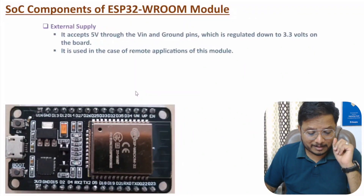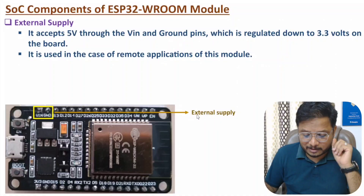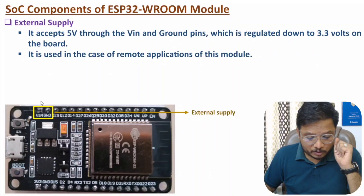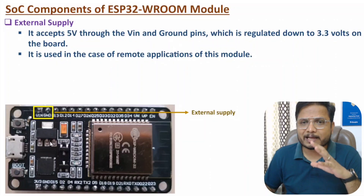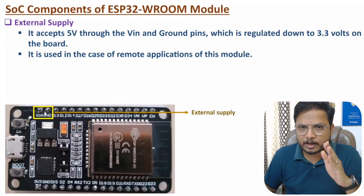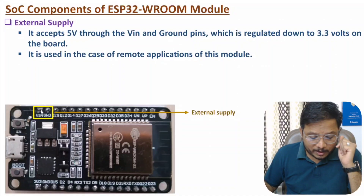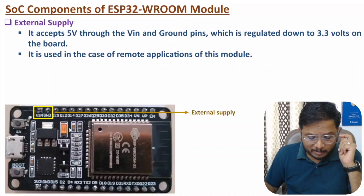The next SoC component is the external supply. You can observe we have VIN and ground pins. With these pins, we can apply external supply up to 5 volts. That 5 volts is regulated down to 3.3 volts on the board. In IoT applications for remote use, we need to give power supply from here. At maximum, one can give 5 volt supply. If you give higher than 5 volts, there is a possibility of thermal runaway of this module.